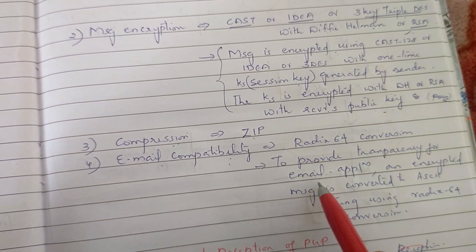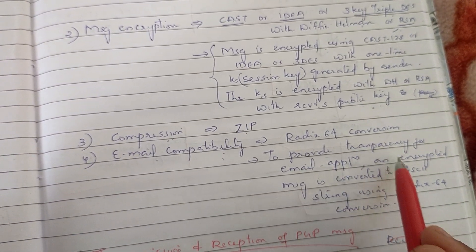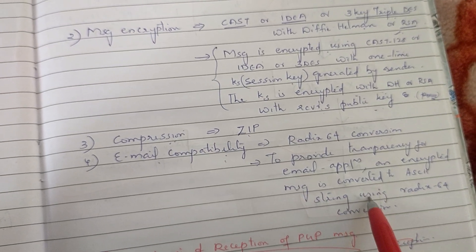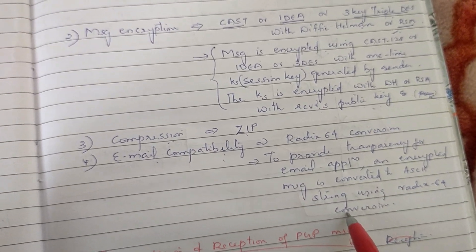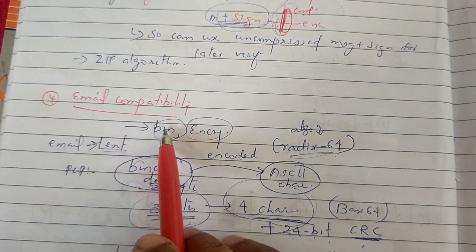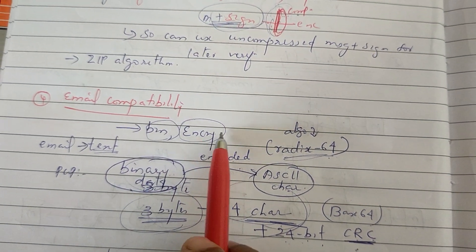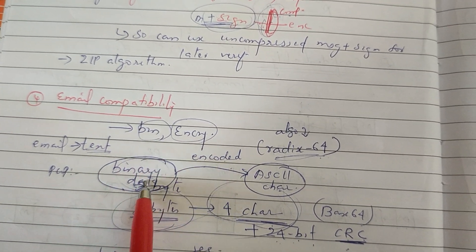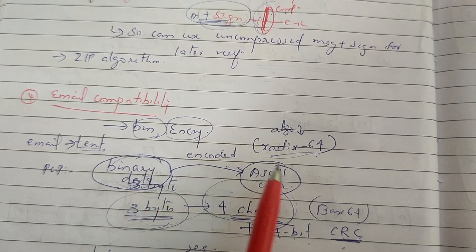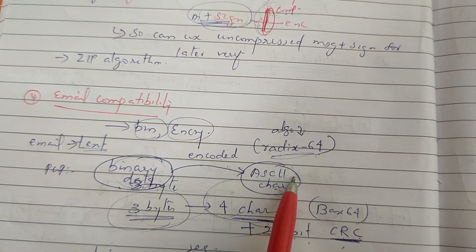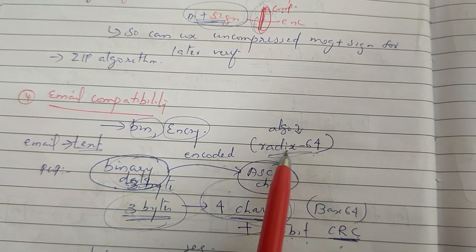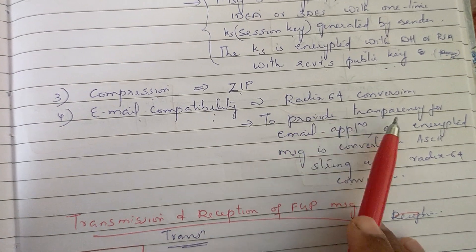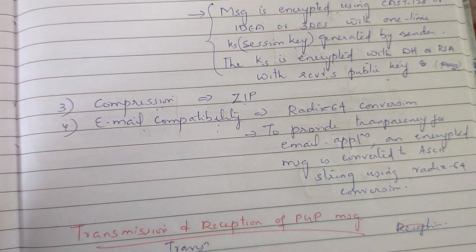Our email application handles this transparently. We encrypt the message into Radix-64 ASCII format using Radix-64 conversion. Since email supports text but not raw binary, we convert the binary encrypted format using Radix-64. Email compatibility is achieved through Radix-64 conversion.